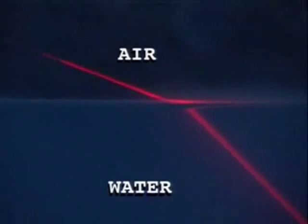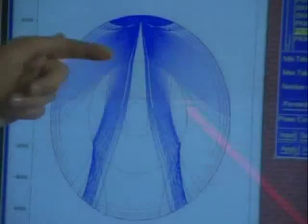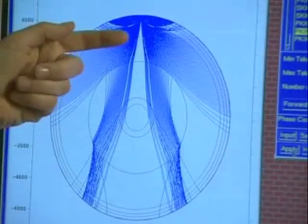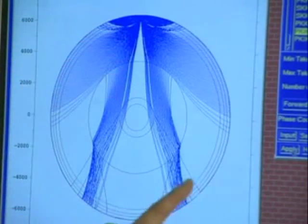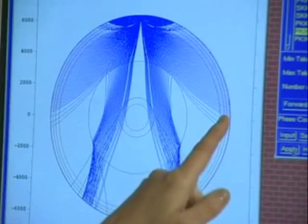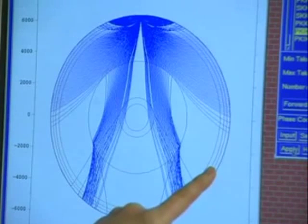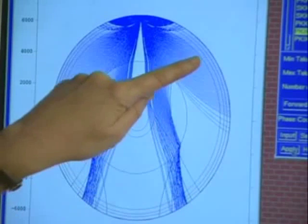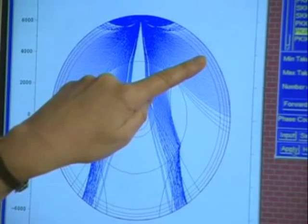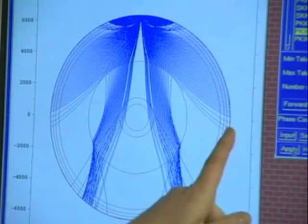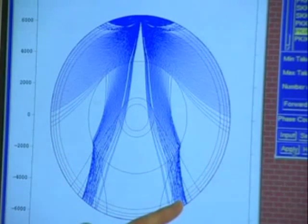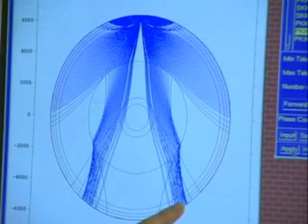Just as light waves get bent when they change from air to water, earthquake waves get strongly bent when they go from solid to liquid. The important thing to note is that there is a whole zone on the surface of the Earth where if you put a station, you would not observe a P-wave. This shadow zone, where you cannot observe the P-wave, tells us that there is a liquid core inside the Earth.